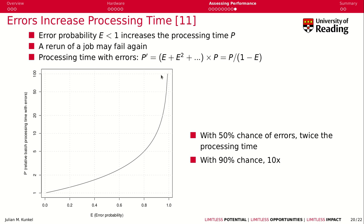Plotting stopped after 100. Remember: with a 50% chance of error, twice the processing time is needed; with a 90% chance of error, it's 10 times the processing time. For practical reasons, you must certainly always stay below a 50% chance of errors.